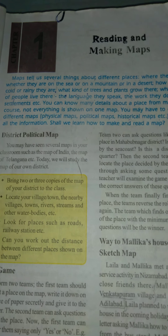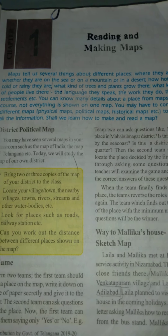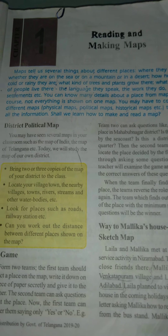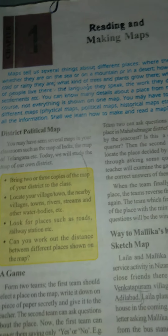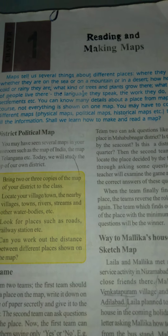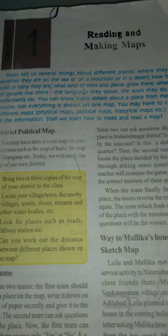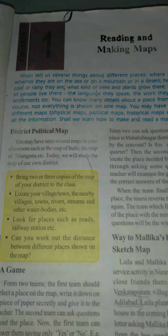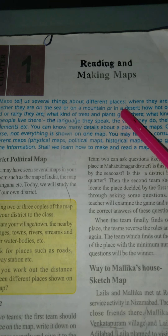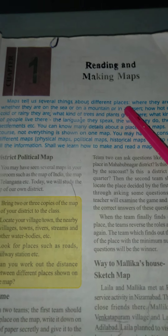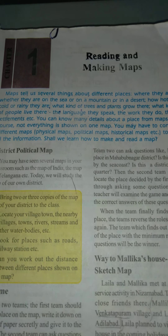In your previous class — Fifth class — you must have heard about maps: different kinds of maps, like the physical map, political map, and so on. So we have some different types. We will now start reading and making maps. Shall we start now? Maps tell us several things about different places.